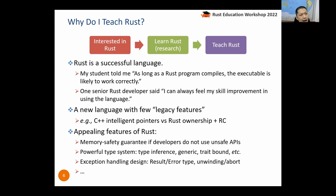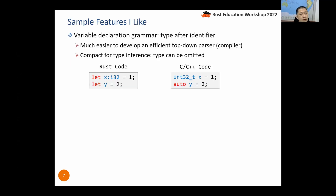The second reason I choose to teach Rust is because it's a new language with very few legacy features. Imagine C++ — people often compare smart pointers and reference counting with Rust's ownership, but in C++ you can still use raw pointers very often, making the language less secure due to its many legacy features. Besides, Rust has many attractive features as a new programming language beyond memory safety, such as its powerful type system and exception handling mechanism.